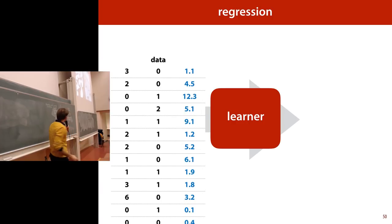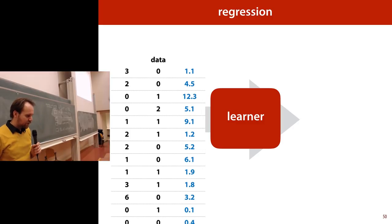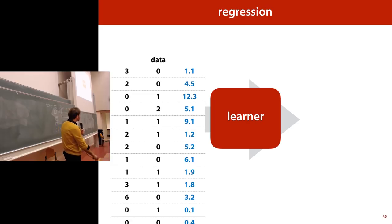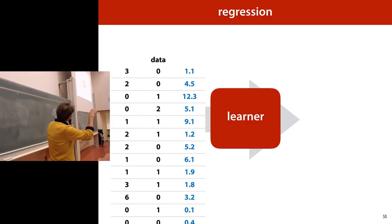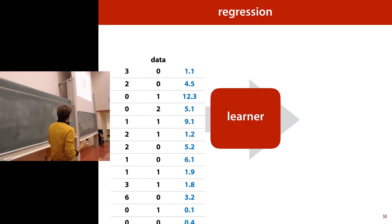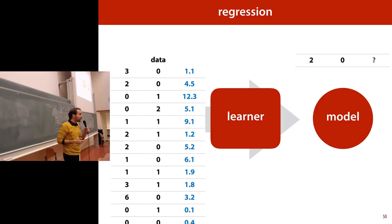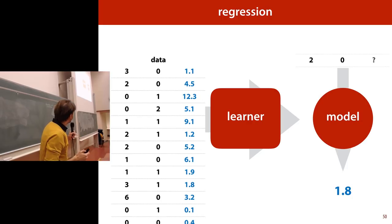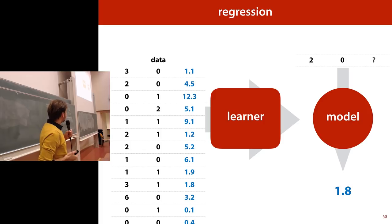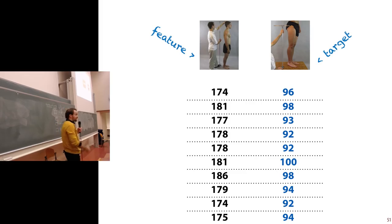We're done with classification — let's move to regression. Almost all of regression looks very similar to classification, except that the target data is now a number instead of a class. That's all that's different. We still have a data table, examples, features. We pass it to the learner and the learner outputs a model. Instead of predicting a class, the model predicts a number. And that's just regression.